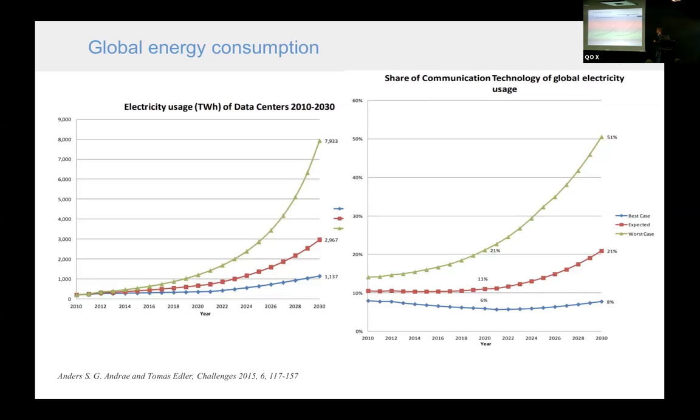And this problem will become even more important because if we look at the trends of global electricity usage and CO2 emissions, then depending on which scenario we pick, in the worst-case scenario, we will have in 2030 even more than 50% of electricity and CO2 emissions due to information technology. The strain on computation is really growing.